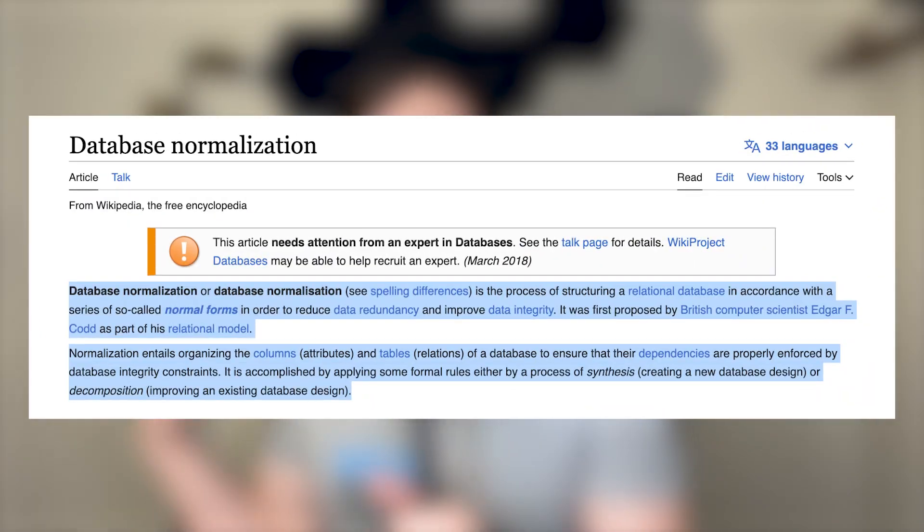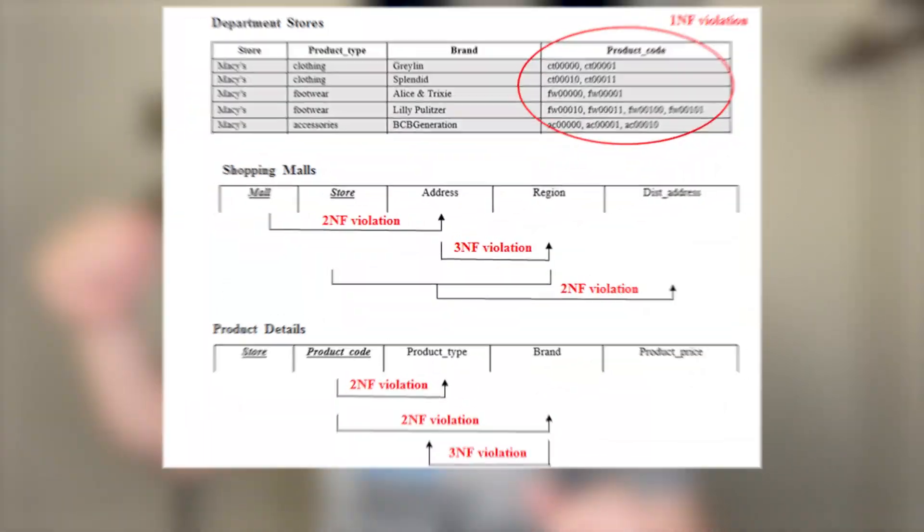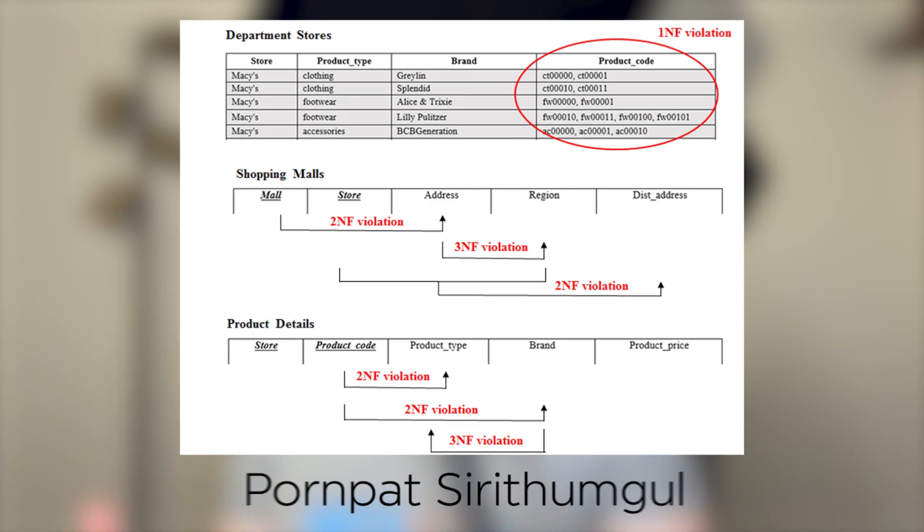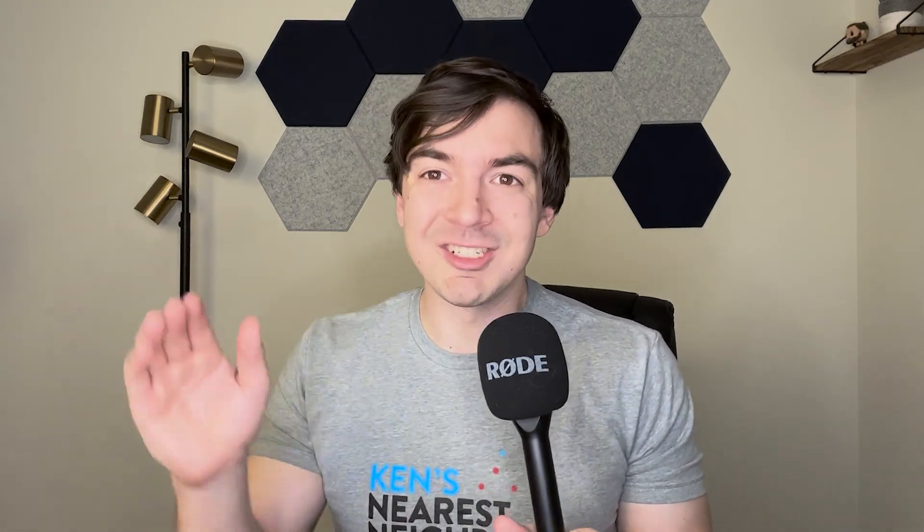Normalization, when referring to database design techniques, is a method to basically eliminate things such as duplicate data that could exist in the same table, multiple tables, or having columns with multiple values in them. It also tries to eliminate oddities and issues that occur during insertion of data, updating of data, and other anomalies. Basically, when you need to insert data, if you have to constantly update multiple fields or rows all at once because of a small change, it poses a lot of risk.